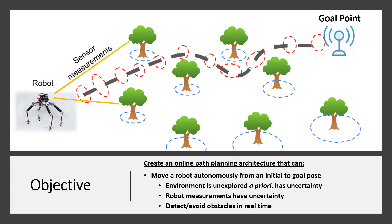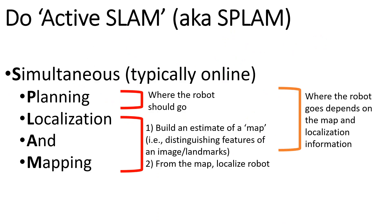Our objective is to create an online pathfinding architecture that moves a robot from an initial pose to a final pose, while assuming the environment is unexplored a priori, has uncertainty due to sensor measurements and robot dynamics, and can detect and avoid obstacles in real time. This objective falls into solving the popular and difficult problem of active SLAM, sometimes referred to as SPLAM, which stands for Simultaneous Planning, Localization, and Mapping — where the robot's path depends directly on the map and localization information.